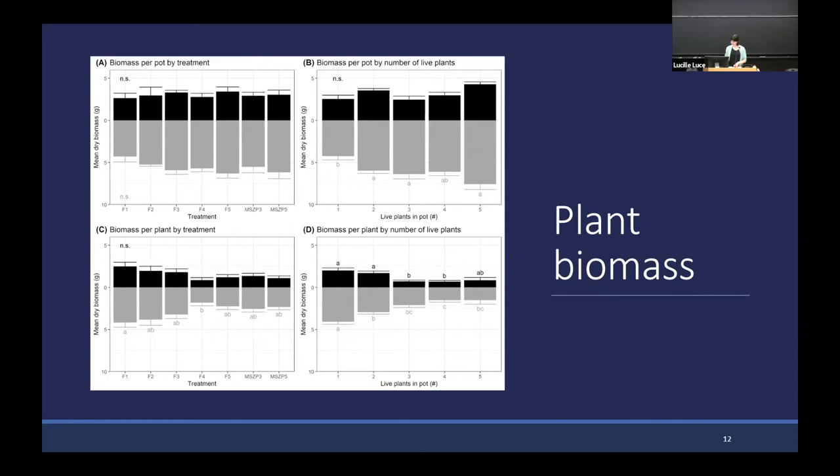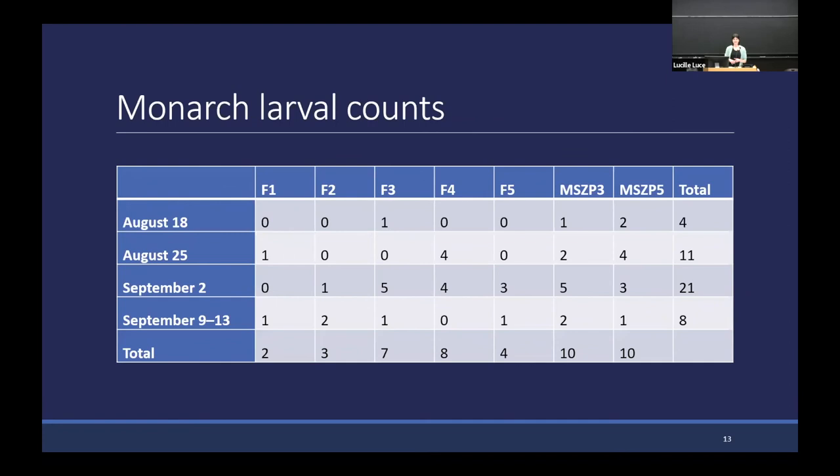I'll also note that we did see monarch larvae in all treatments, and all treatments exhibited evidence of herbivory. Because this is a single array of plots, it's not the right design to assess monarch preference or performance, but this is early evidence that agglomeration in the MSVP does not inhibit or deter monarchs from laying their eggs or eating the milkweed plants.